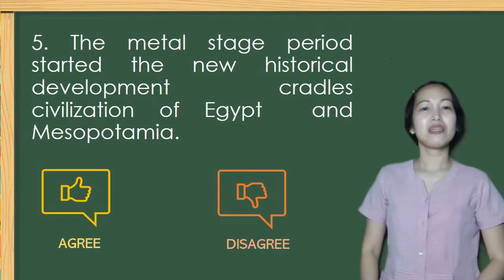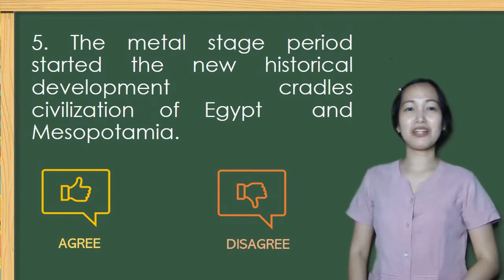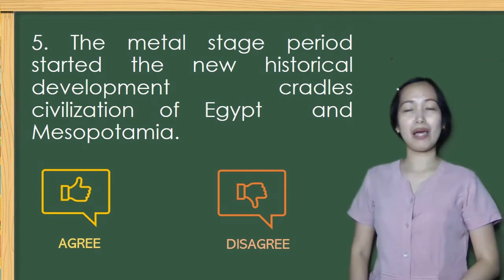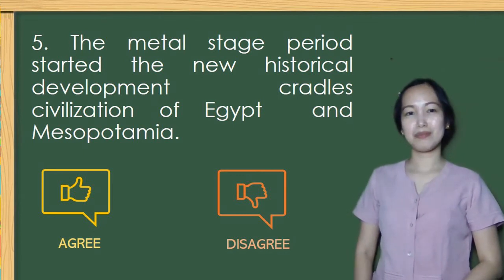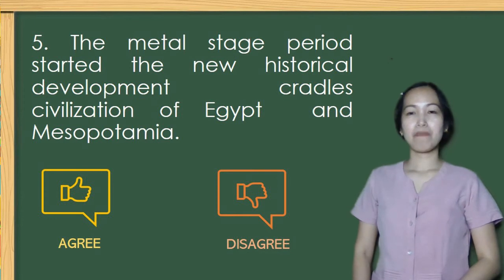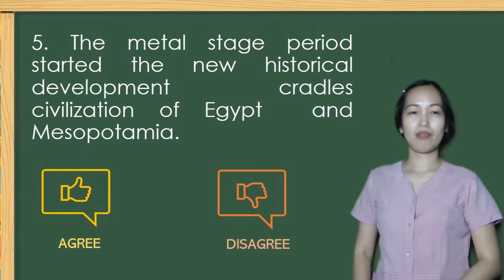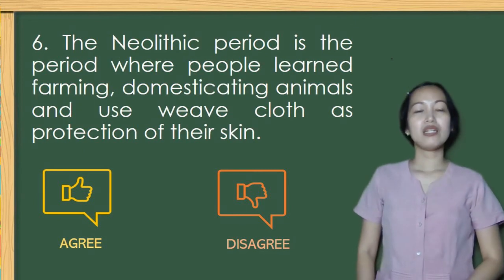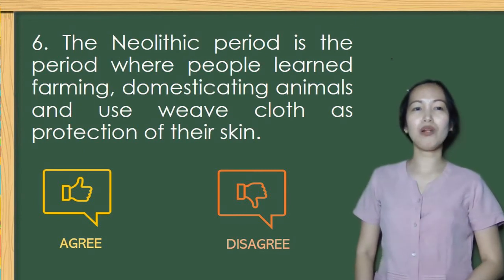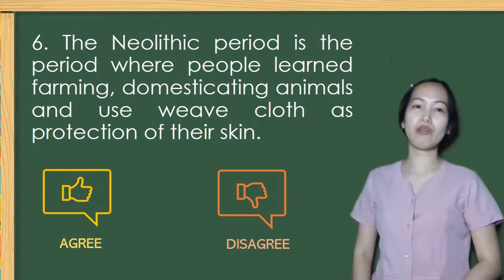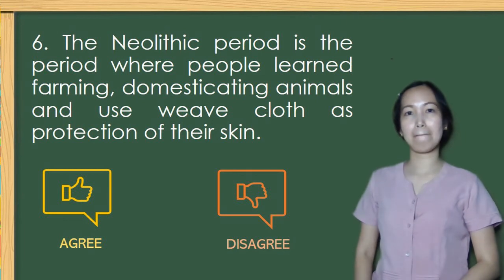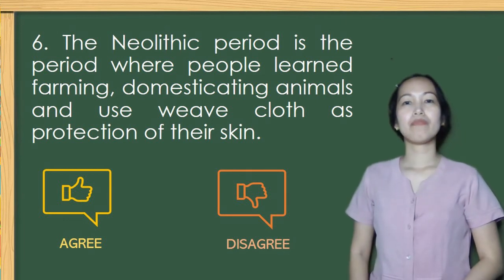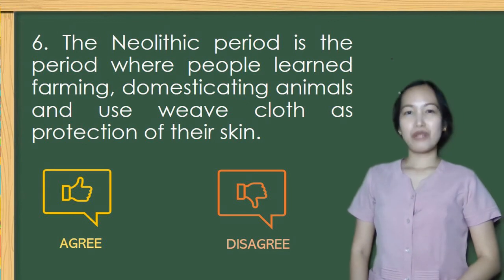Number 5. The Metal Age period started the new historical development of the cradle civilizations of Egypt and Mesopotamia. The correct answer is agree. Number 6. The Neolithic period is the period where people learned farming, domesticating animals, and used cloth as protection for their skin. The correct answer is agree.